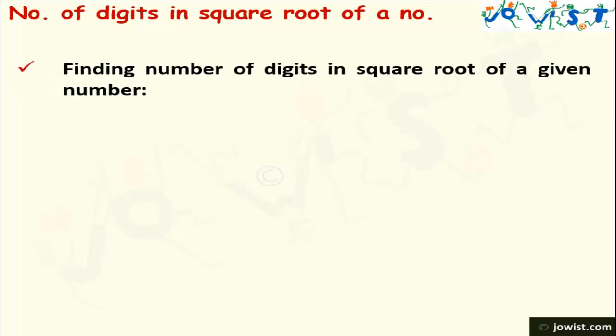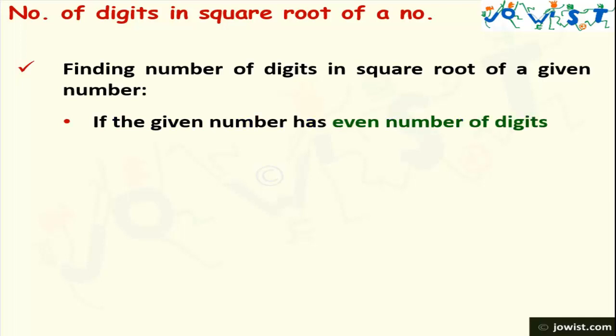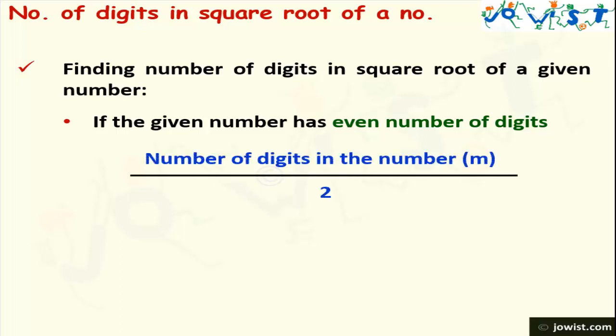Now let's learn finding the number of digits in the square root of a given number. If the given number has an even number of digits, the formula for finding the digits would be m divided by 2, where m represents the number of digits in the given number.